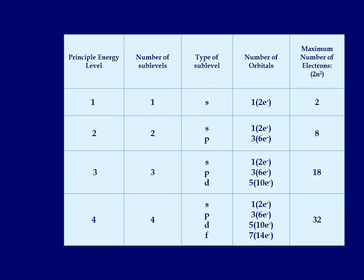So at principal level one, you only have one type of sublevel, that's s. It has one orbital and can hold two electrons. At the second level, you have the s and p sublevels. Again, one orbital, three orbitals. So the number of electrons here, one times two would be two, and three times two is six. So at level two, since you have both the s and the p type of sublevels, you could have a total of eight electrons.